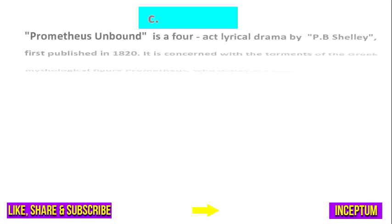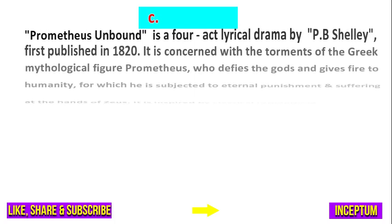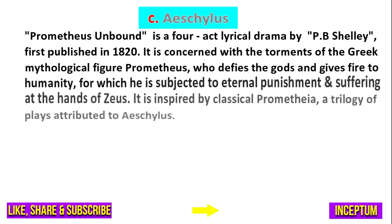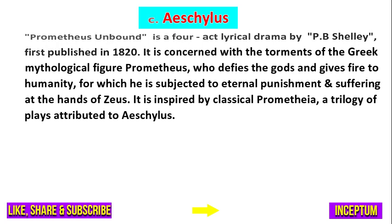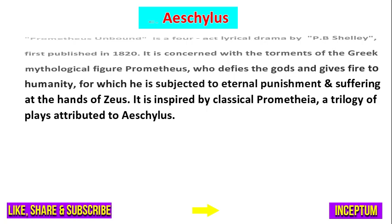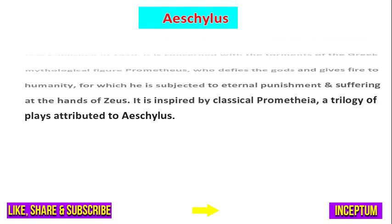And the right answer of this question is option C — Aeschylus. Prometheus Unbound is a four-act lyrical drama by P.B. Shelley, first published in the year 1820. It is concerned with the torments of the Greek mythological figure Prometheus, who defies the gods and gives fire to humanity, for which he is subjected to eternal punishment and suffering at the hands of Zeus. It is inspired by the classical Prometheia, a trilogy of plays attributed to Aeschylus.